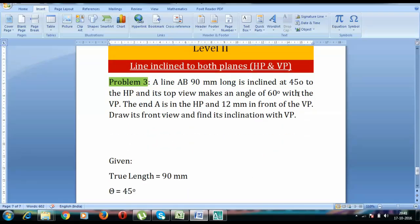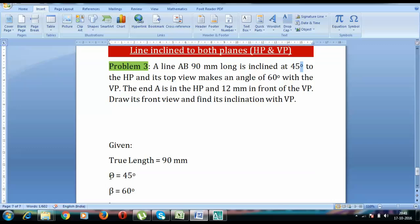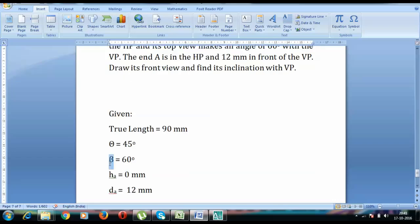Now we have this true length in the form of 90 millimeters. This line is making 45 degree angle with the horizontal plane, so that's why we have written theta as 45 degrees. The angle that the top view makes with the vertical plane is represented by beta, so top view is not the true length.